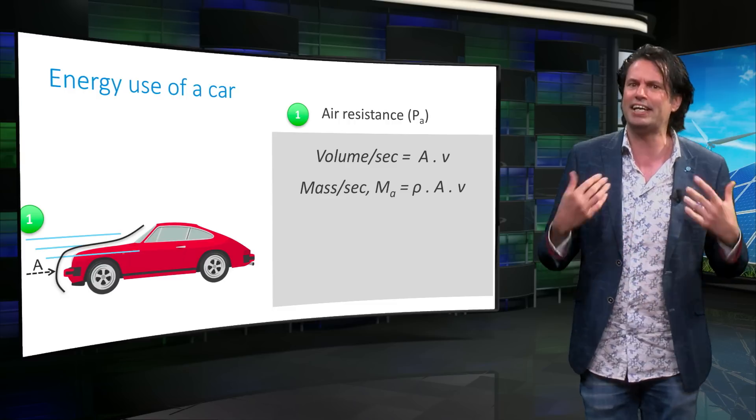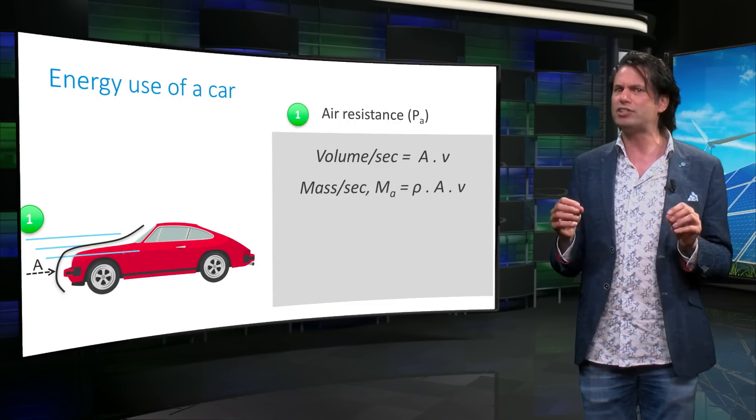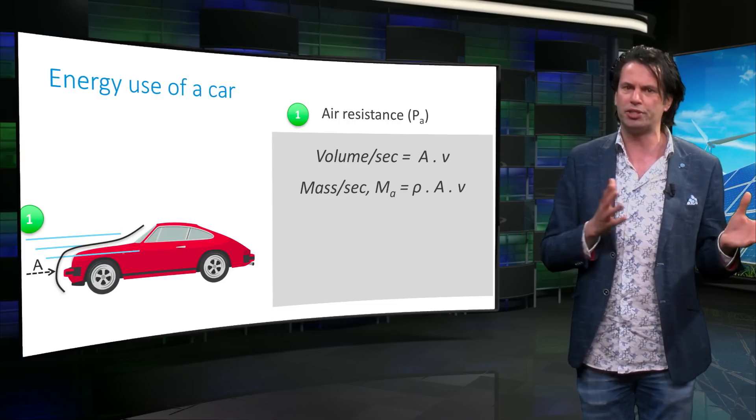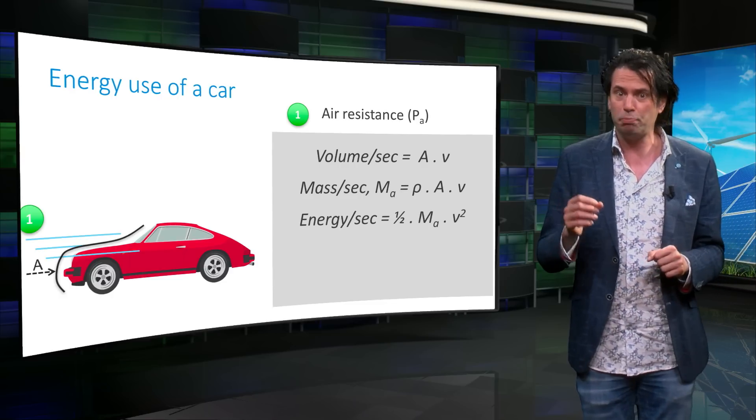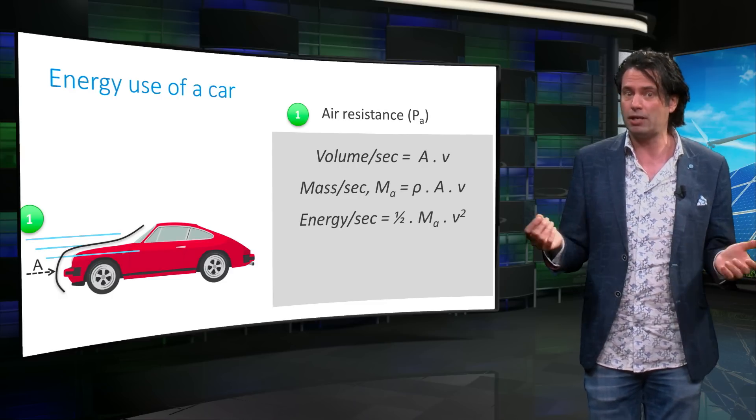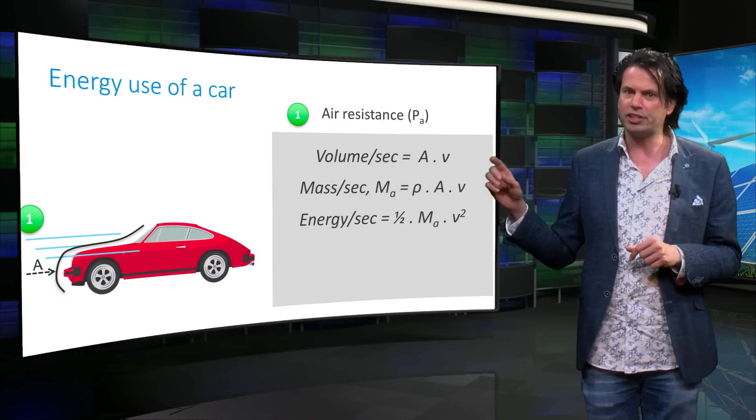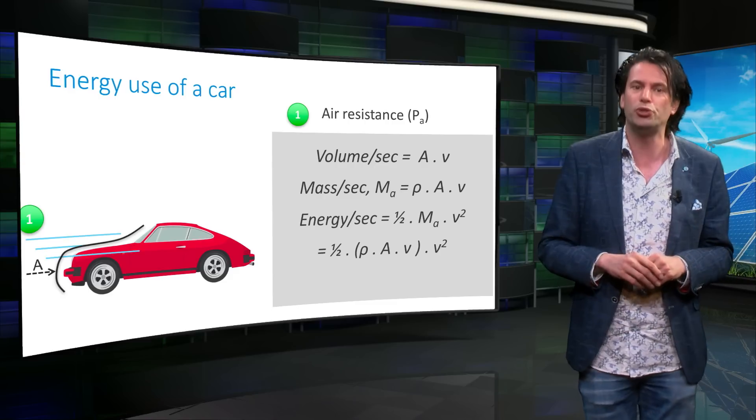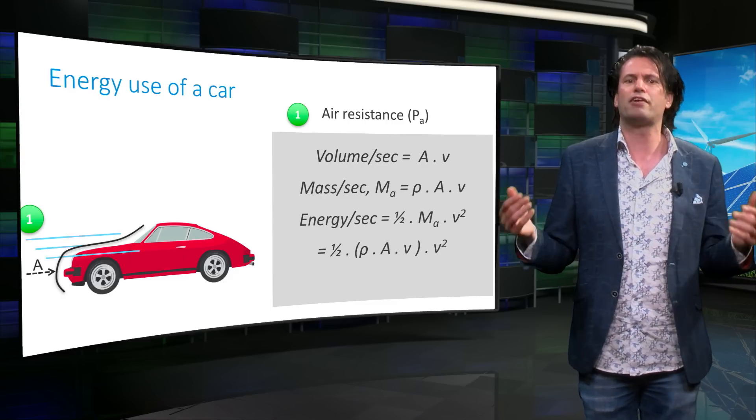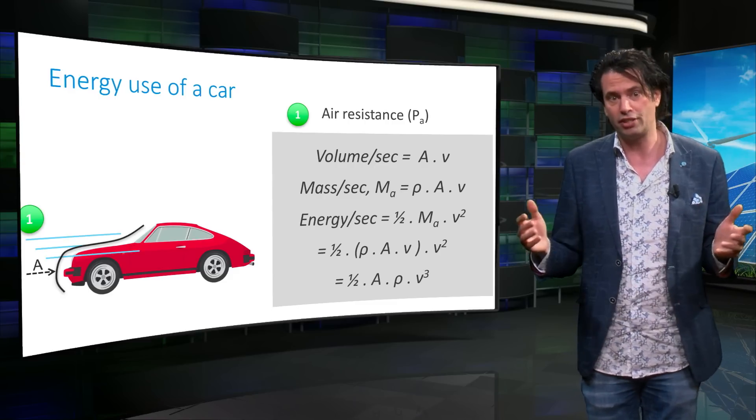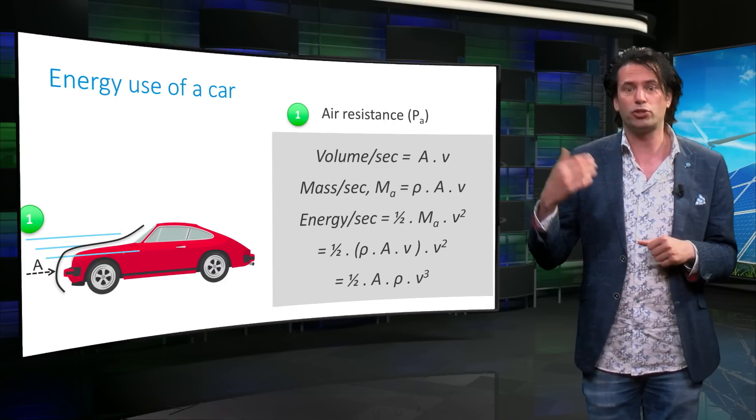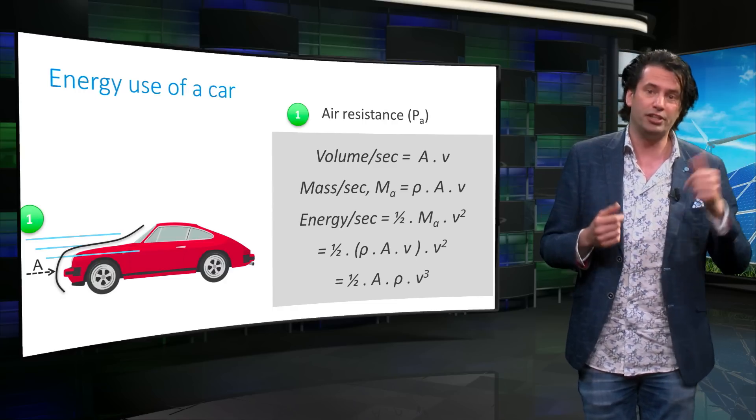If you multiply this by the density of air rho, you get the total air mass per unit time. The kinetic energy per unit of time is half times the air mass times the velocity squared. Substituting the equation for the air mass per unit of time leads to the final form of this equation, which is half times A times rho times V cubed.